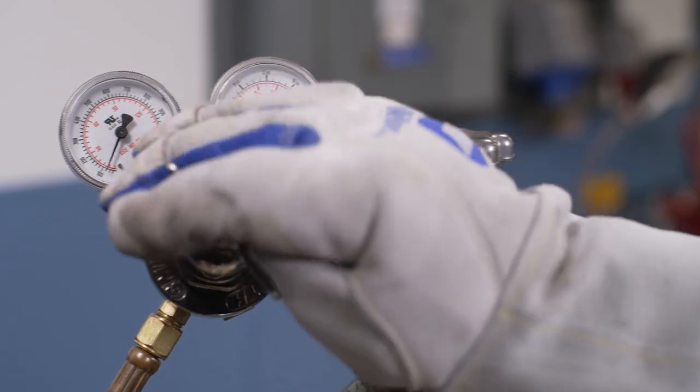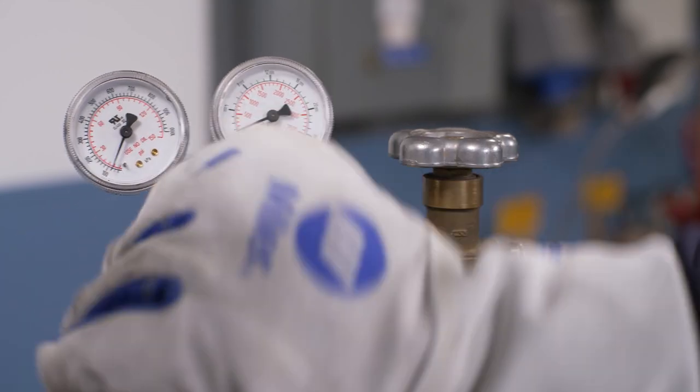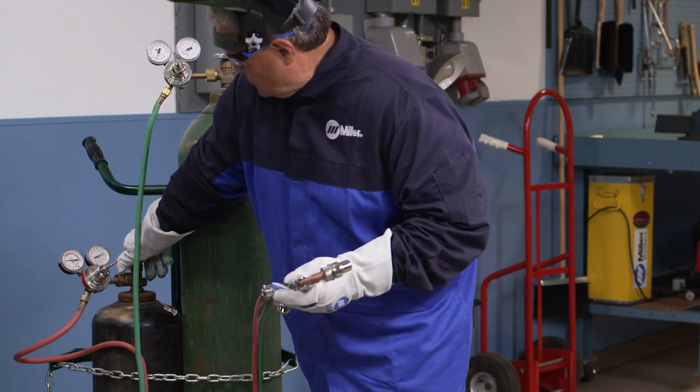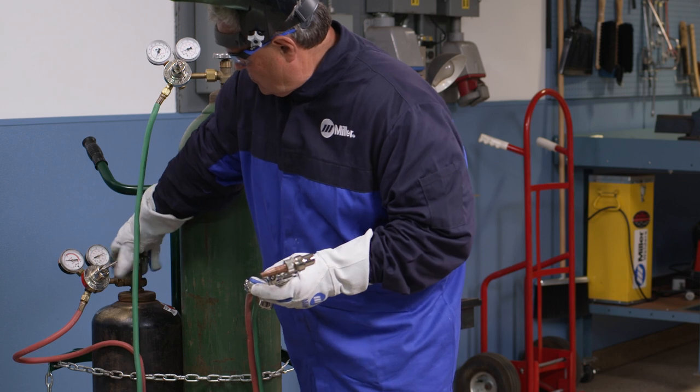Next, back out the oxygen regulator adjusting screw to the out and off position. Now, repeat the process for the fuel side of the system.